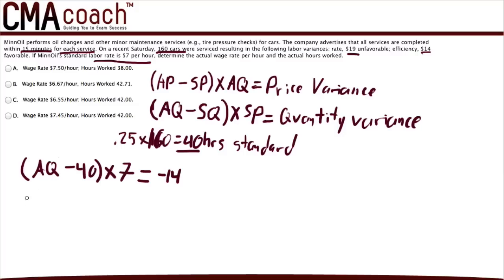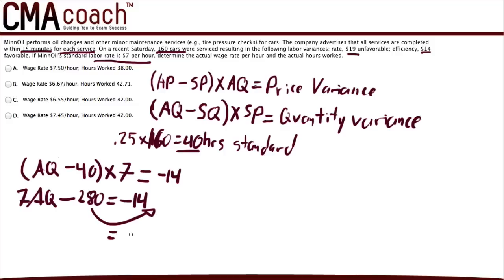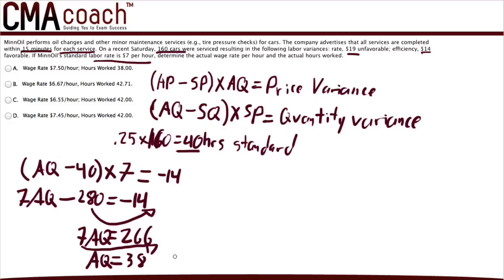Expanding: 7·AQ minus 40 times 7 is 280, equals negative 14. Moving 280 to the other side gives 7·AQ equals 266. Dividing both sides by 7, AQ equals 38. So the actual hours worked is 38 hours.